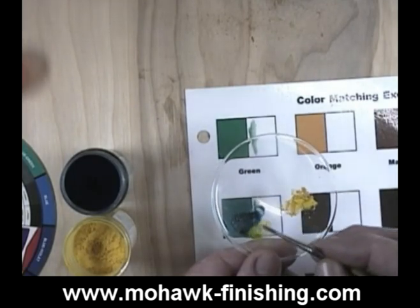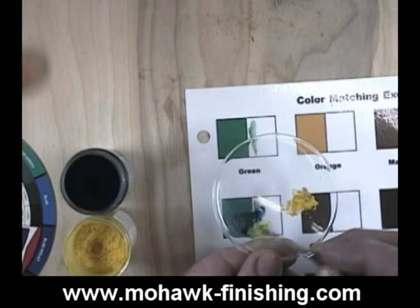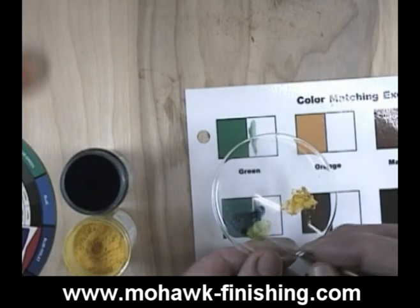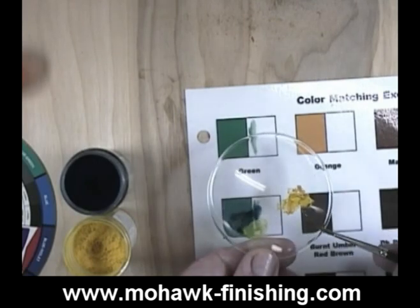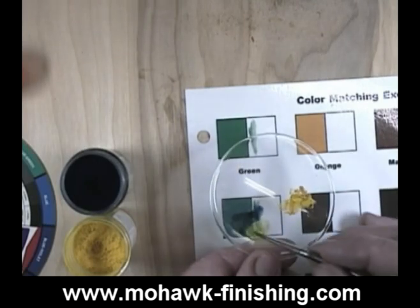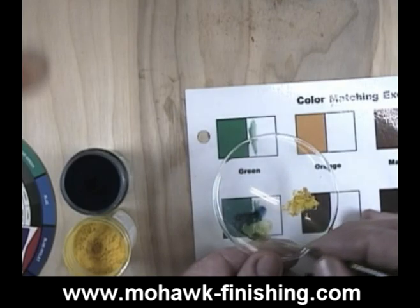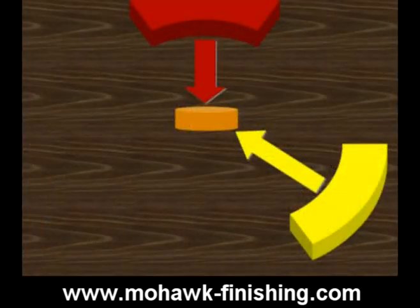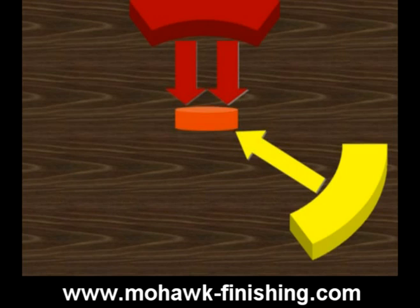There is also the question as to which blue or red or yellow is exactly the right one. However, the theory still works. When you mix red and yellow, you will get a shade of orange. Of course, if you add more red than yellow, you'll get red-orange — in other words, an orange that has more red in it than yellow.